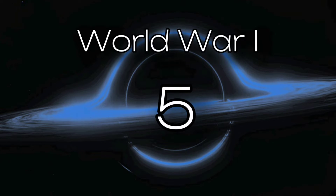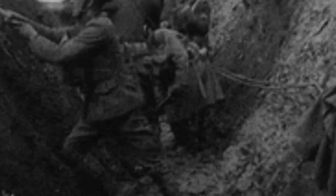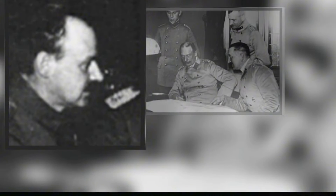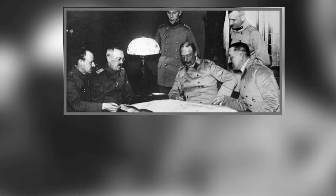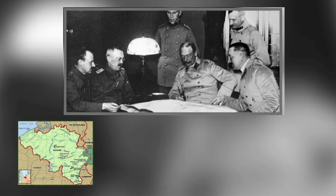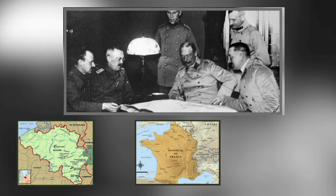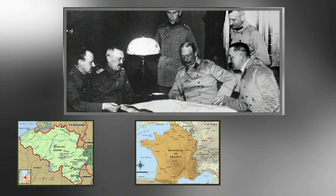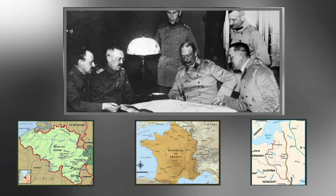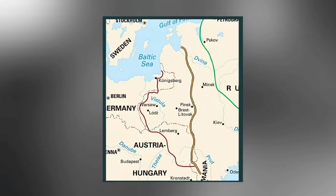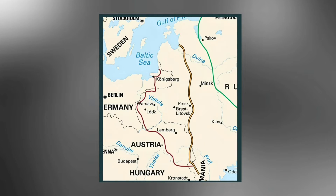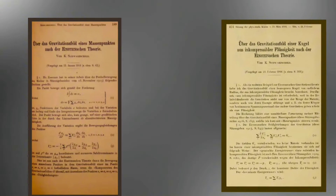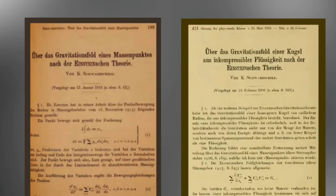5. World War I. When the Great War broke out in August of 1914, Schwarzschild, who was then over 40 years old, volunteered for military service. He gained the rank of Lieutenant and served in Belgium, where he managed a weather station; in France, where he was assigned to an artillery unit and tasked with calculating missile trajectories; and then later on the Eastern Front in Russia. It was during the war on the Eastern Front where Schwarzschild would write three papers: one on quantum mechanics, and his two seminal papers on Einstein's very recent theory of general relativity.